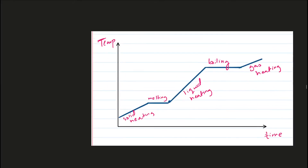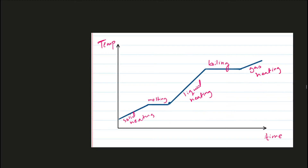This graph shows the heating curve of a substance starting from a solid. As you keep heating it, it melts — during melting, temperature does not change. Then the liquid starts to heat up and temperature rises, then it boils — during boiling the temperature also does not change — and then it turns into a gas and temperature starts to rise again. The gradients in the solid, liquid, and gas sections represent the relative specific heat capacities in each state. The steeper the gradient, the lower the specific heat capacity of the substance in that state.